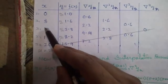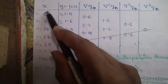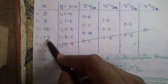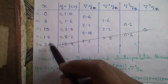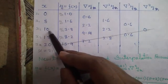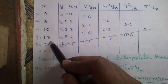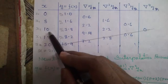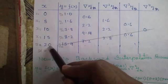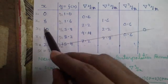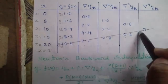Here, 10 is the middle element since it has two numbers above it and two numbers below it. So when x is below the middle element — for example, x equal to 11, 13, or 17 — we will use Newton's backward interpolation formula.